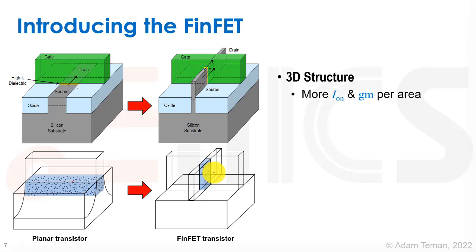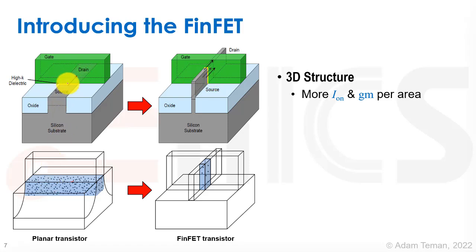This is a 3D structure — or at least two-and-a-half dimensional. We build on top of the planar substrate level and extend into an extra dimension. This gives more on-current, gm, and gain per area, because the height of the fin provides additional carriers. Versus a planar structure with only a shallow channel, the third dimension allows more current to flow, and in principle the fin can be made taller to provide even more current for the same footprint area.